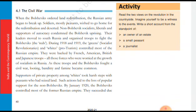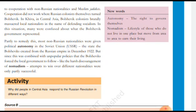The Bolsheviks claimed to be defending socialism while controlling most of the former Russian empire. Non-Russian nationalists were given political autonomy in the Soviet Union — the state the Bolsheviks created from the Russian empire in December 1922.